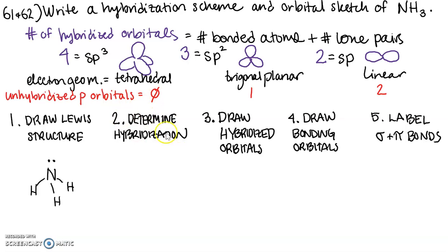And then what we want to do is determine the hybridization step two. Up here we've got this trick. What we can do is just count the number of bonded atoms and lone pairs, add them together, and that'll give us the number of hybridized orbitals.